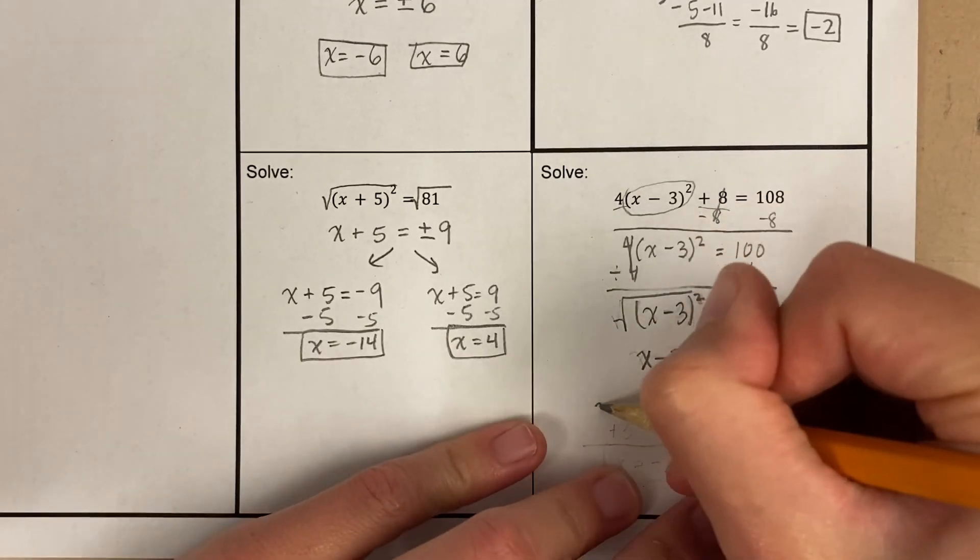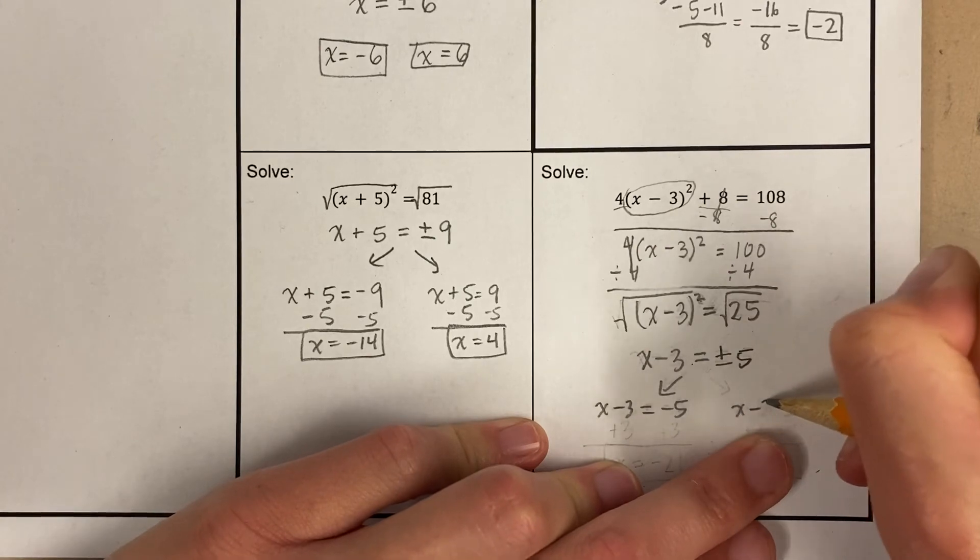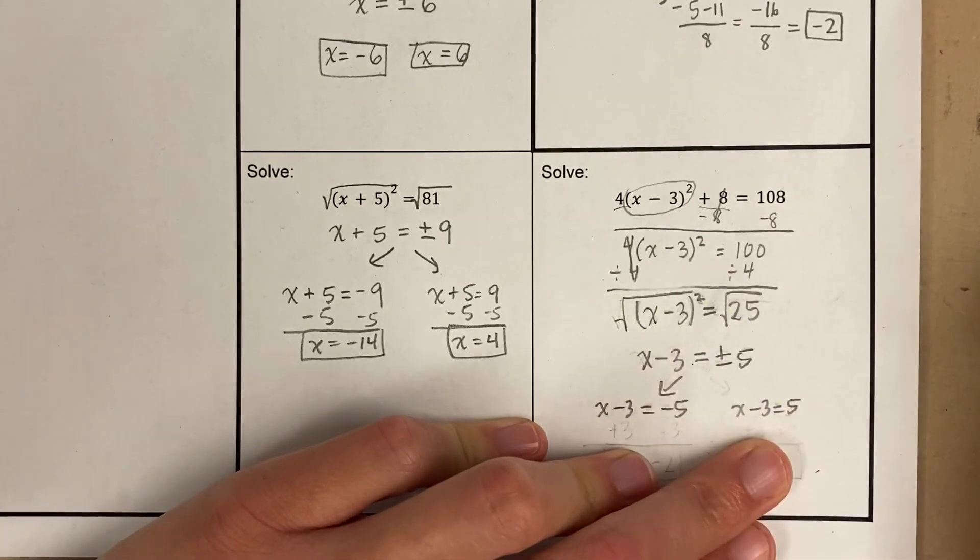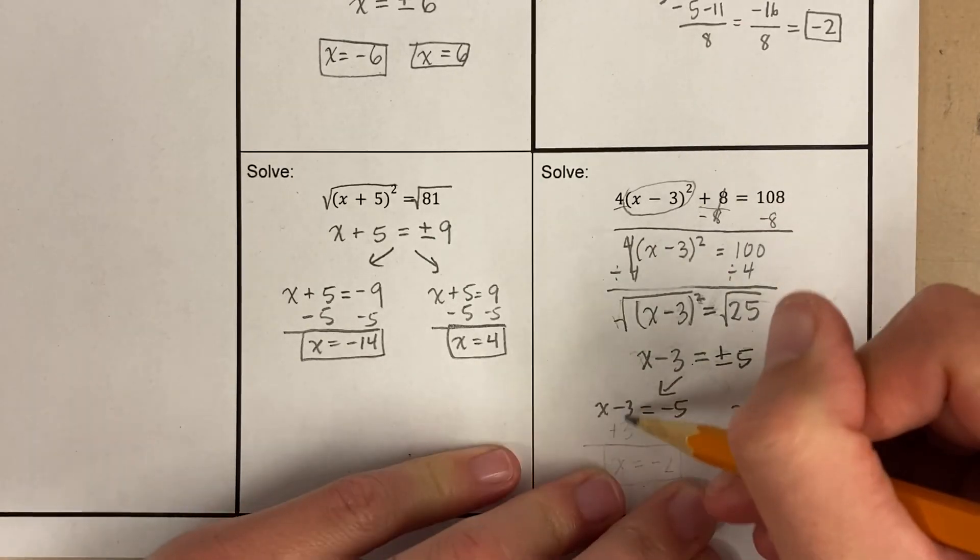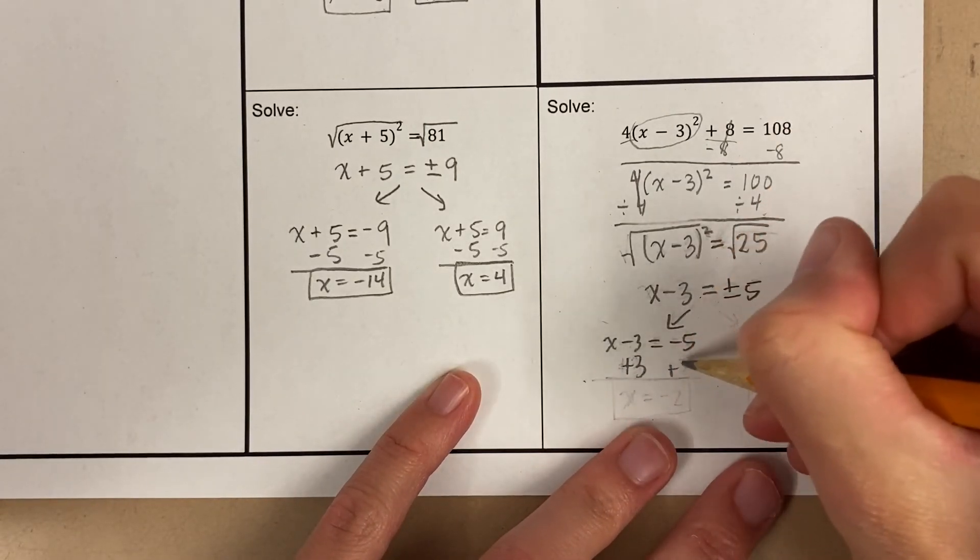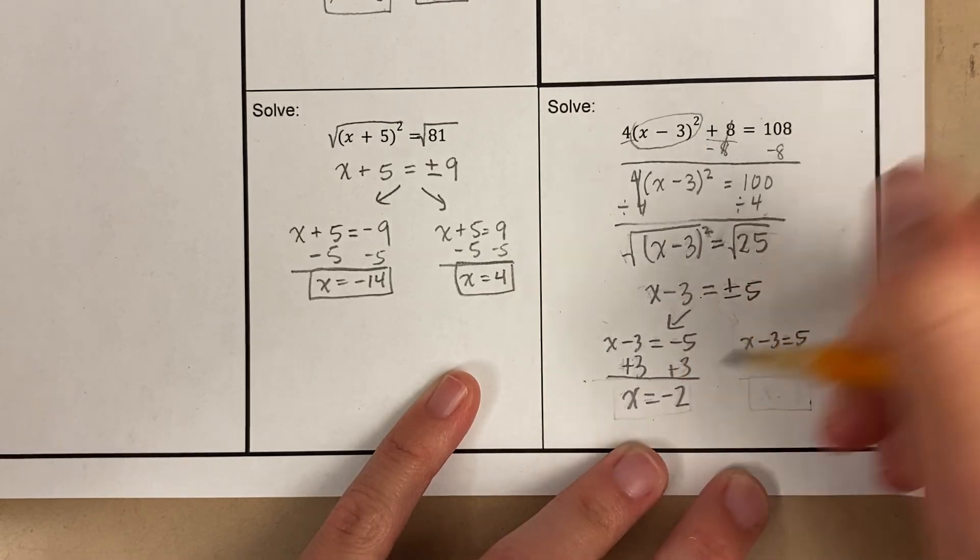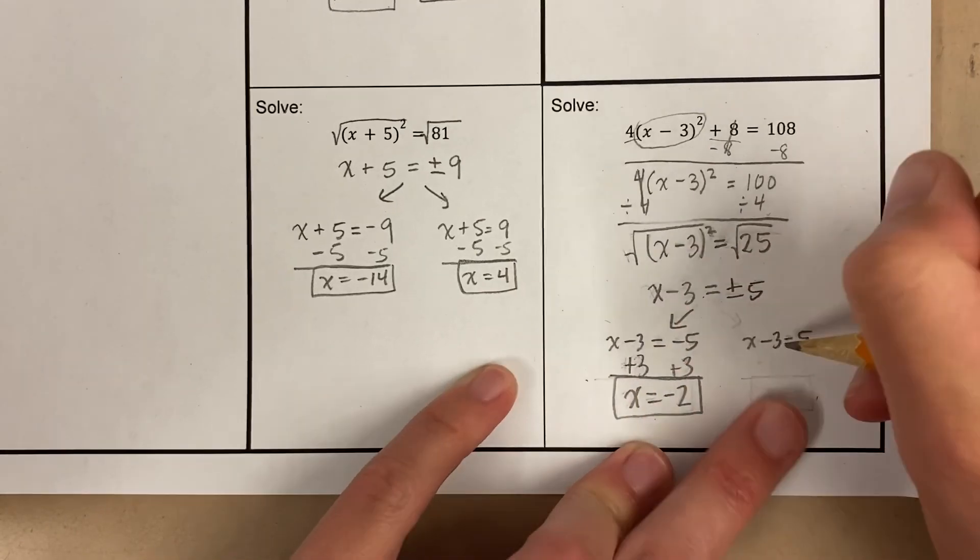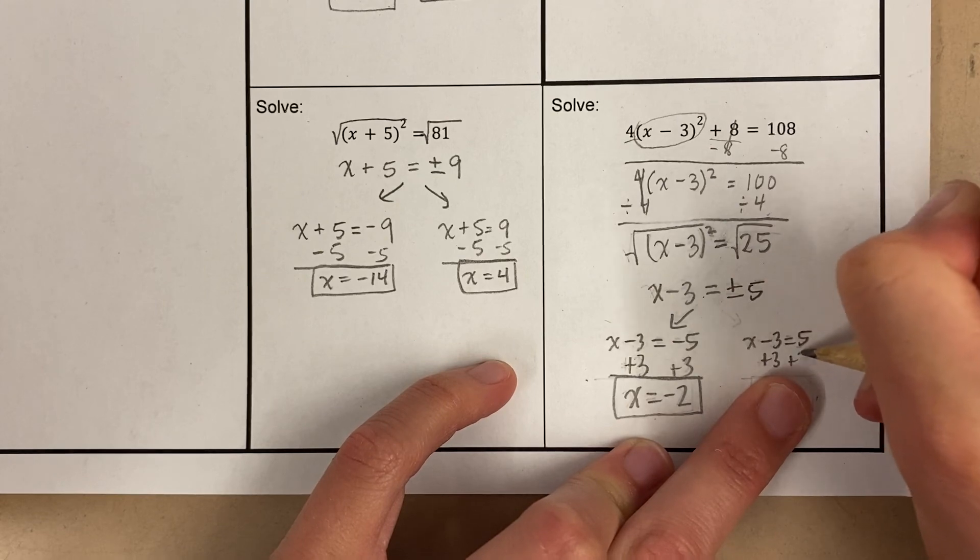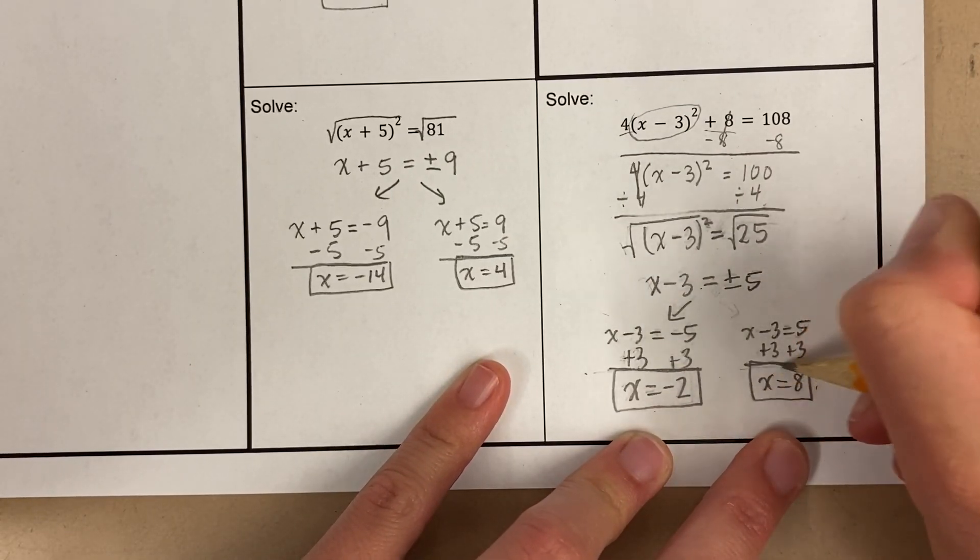So this is where I say, oh, well, x minus 3 could equal negative 5 or x minus 3 could equal positive 5, okay? And then if I want to get x by itself, I need to add 3 on both sides. Negative 5 plus 3 is negative 2. That's one answer. Over here, I also need to add 3 on both sides. And 5 plus 3 is 8. That's my other answer.